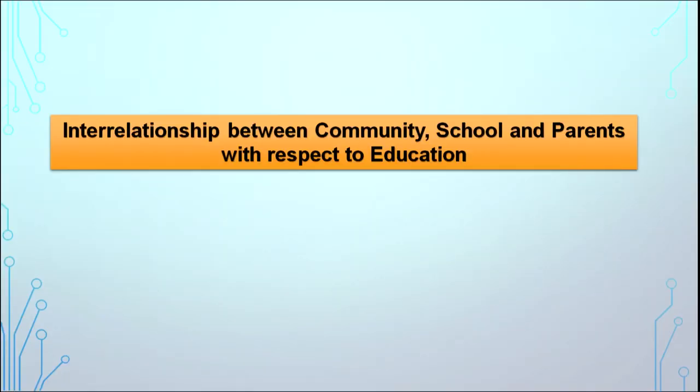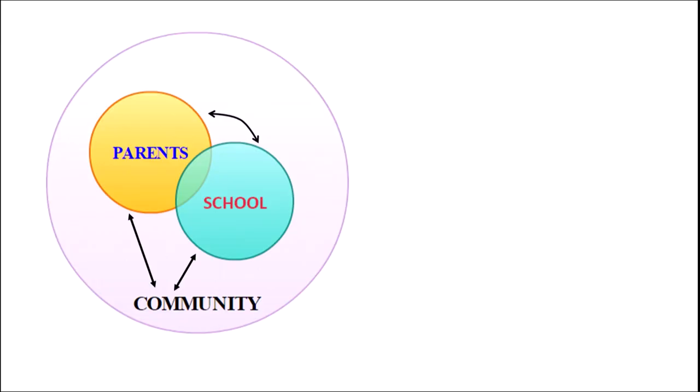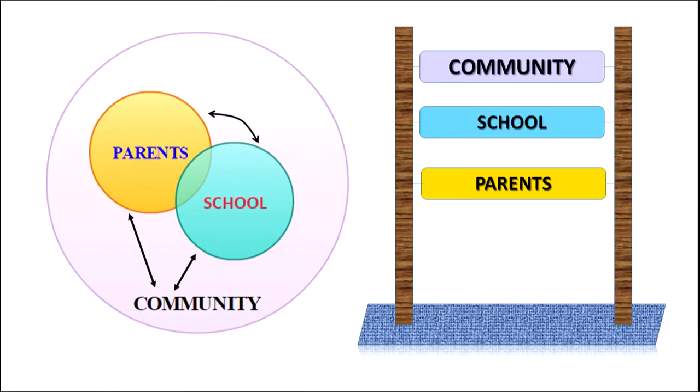What is the interrelationship between the community, school and parents with respect to education? We need to understand this interrelationship so we can foster a relationship between these three components. Looking at the visual, we see three components: the community, the parents and the school. Each has its own responsibility, its own significance and its own status in the whole encounter of learning.